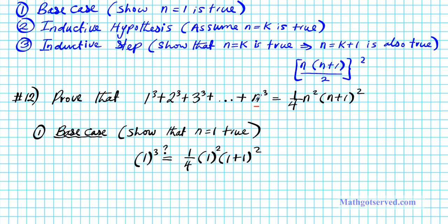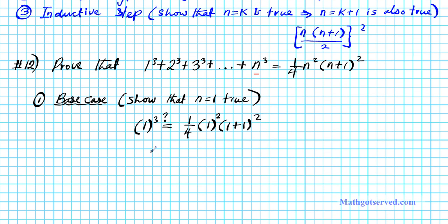Let's work it out. 1³ is just 1. On the right side, using order of operations: 1² is 1, (1+1) = 2, 2² = 4. The 4 in the numerator and the 4 in the denominator divide out, giving 1. We have 1 on the left side and 1 on the right side. Our base case checks out — excellent.